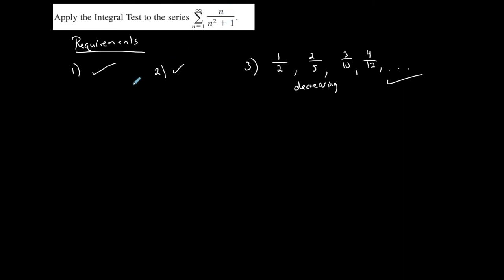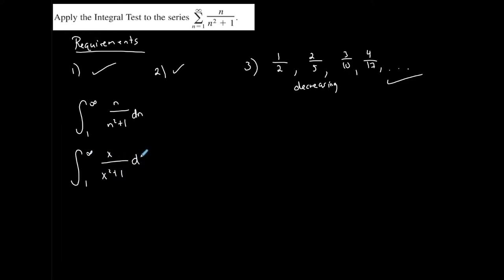Since all three requirements are met, I can set up the integral from 1 to infinity of x/(x²+1) dx. If this converges, the series converges. If this diverges, the series diverges. Now it's about finding an improper integral, which means we take the limit as b approaches infinity of the integral from 1 to b of x/(x²+1) dx.